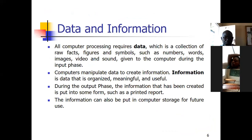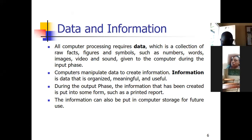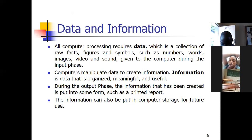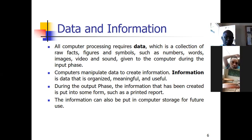Now, I'm sure you're aware of these two terms: data and information. In computers, when we refer to data, we mean a collection of raw facts, figures, and symbols such as numbers, words, images, videos, sound, and other multimedia files. That is the data we're talking about. Another term for data in computer terms is an instruction — it's an instruction, program, or software. An instruction, program, or software is also referred to as data.